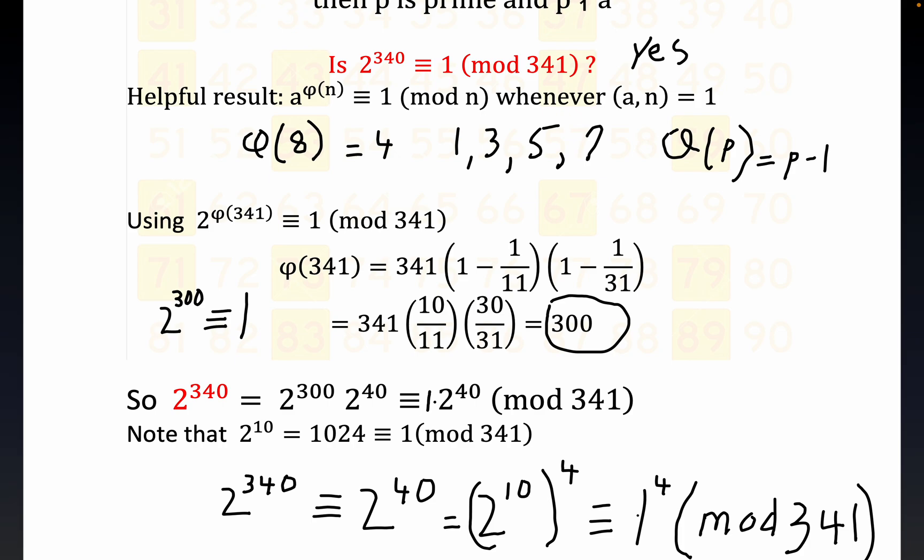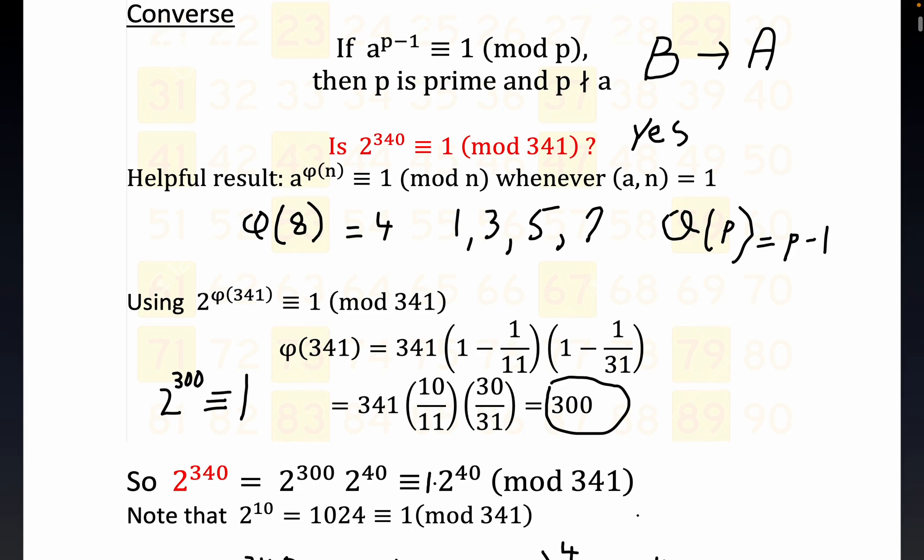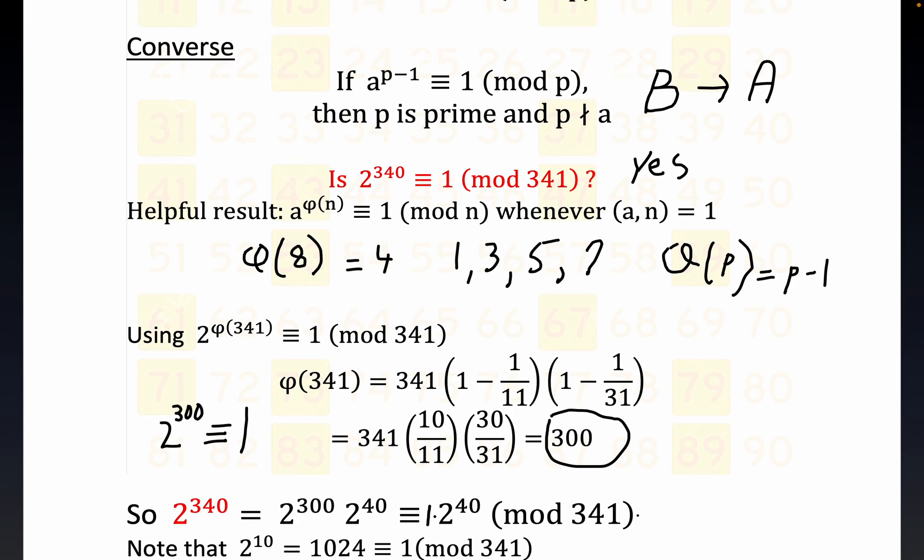That's what we were set out to do. 2 to the 340 is congruent to 1 mod 341, and that is a counterexample. That is a counterexample because we have it - this is the converse - it's in the form a to the p minus 1 equals 1, but p is not a prime. So p is not prime.